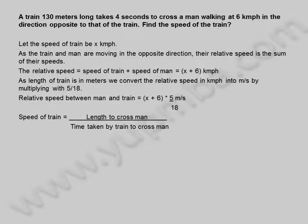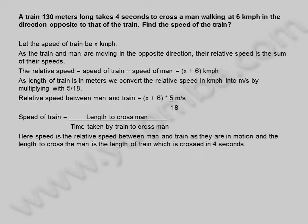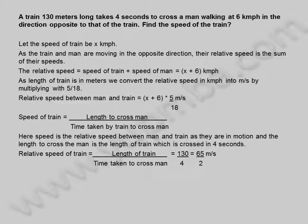Speed of train is equal to length to cross man divided by time taken by train to cross man. Here speed is the relative speed between man and train as they are in motion, and the length of train is crossed in 4 seconds. Relative speed of train is equal to length of train divided by time taken to cross man, which is 130 divided by 4, equal to 65 by 2 meters per second.